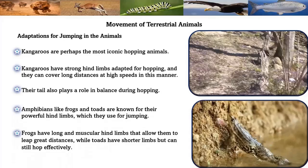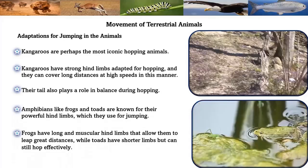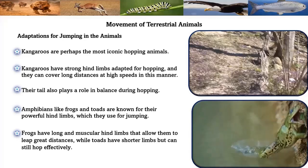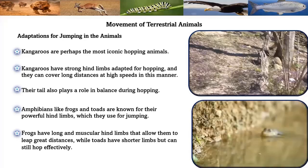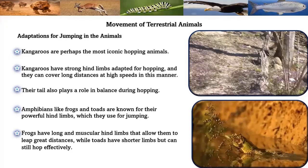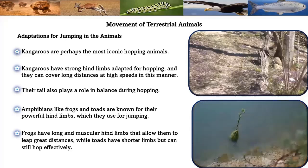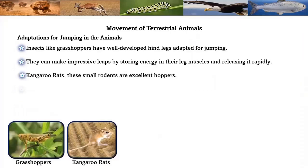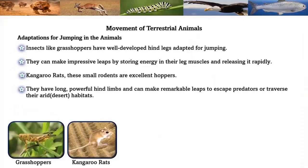Amphibians like frogs and toads are known for their powerful hind limbs, which they use for jumping. Frogs have long muscular limbs that allow them to leap great distances, while toads have shorter limbs but can still hop effectively. Insects like grasshoppers have well-developed hind legs adapted for jumping. They can make impressive leaps by storing energy in their leg muscles and releasing it rapidly.